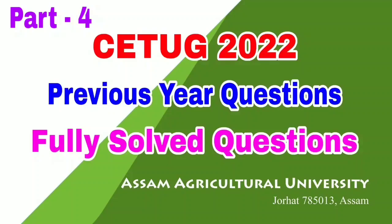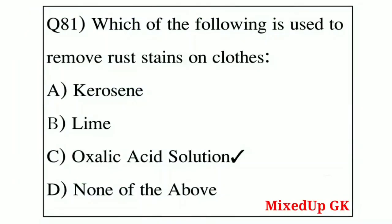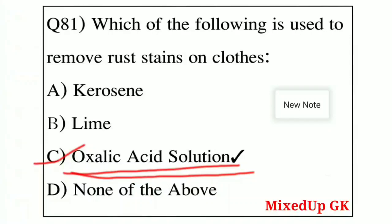Question number one: which of the following is used to remove rust stains on clothes? Option A: kerosene, Option B: lime, Option C: oxalic acid solution, Option D: none of the above. The correct answer is Option C — oxalic acid solution. Oxalic acid solution is used to remove rust stains.